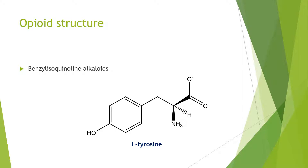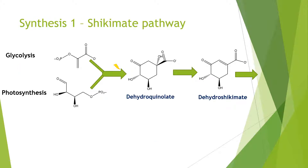Onto the structure. The opioids in question here are the benzylisoquinoline alkaloids, and their main building block is the amino acid tyrosine, which has an aromatic side chain. To make amino acids like tyrosine that have aromatic side chains, plants use the shikimate pathway, which occurs mostly in chloroplasts. It starts off using PEP from glycolysis — phosphoenolpyruvate — and erythrose-4-phosphate from photosynthesis.